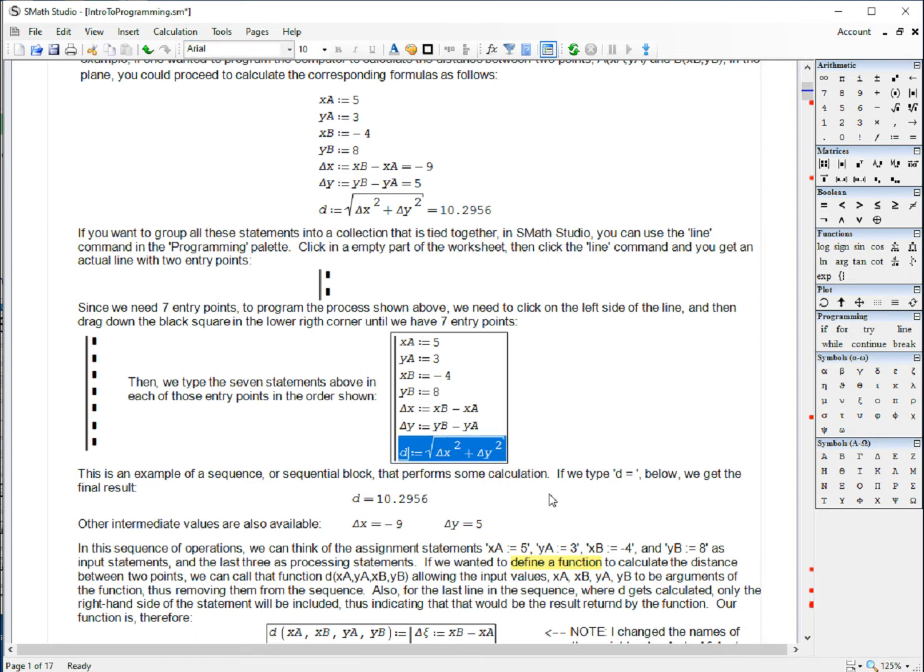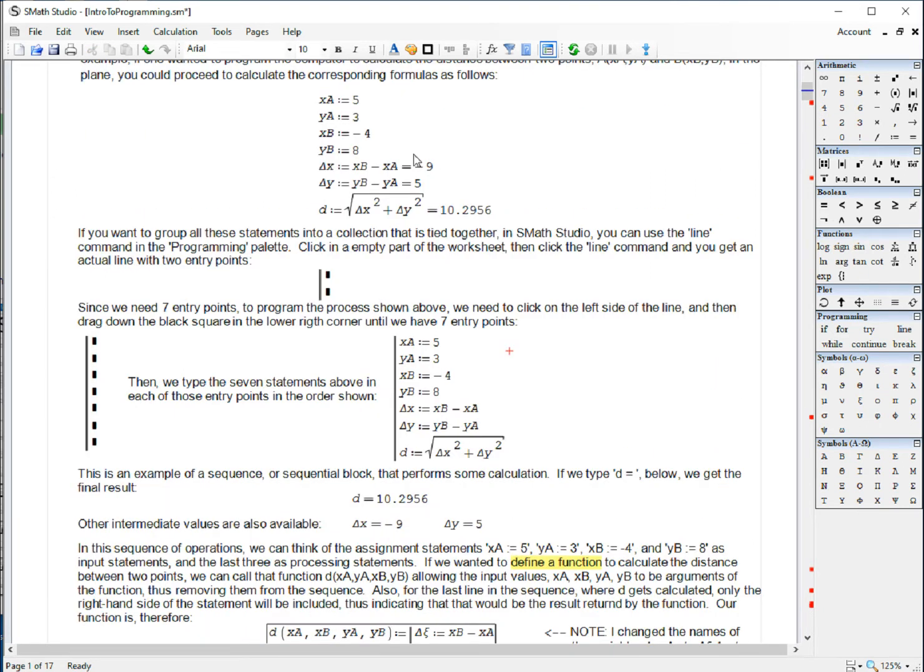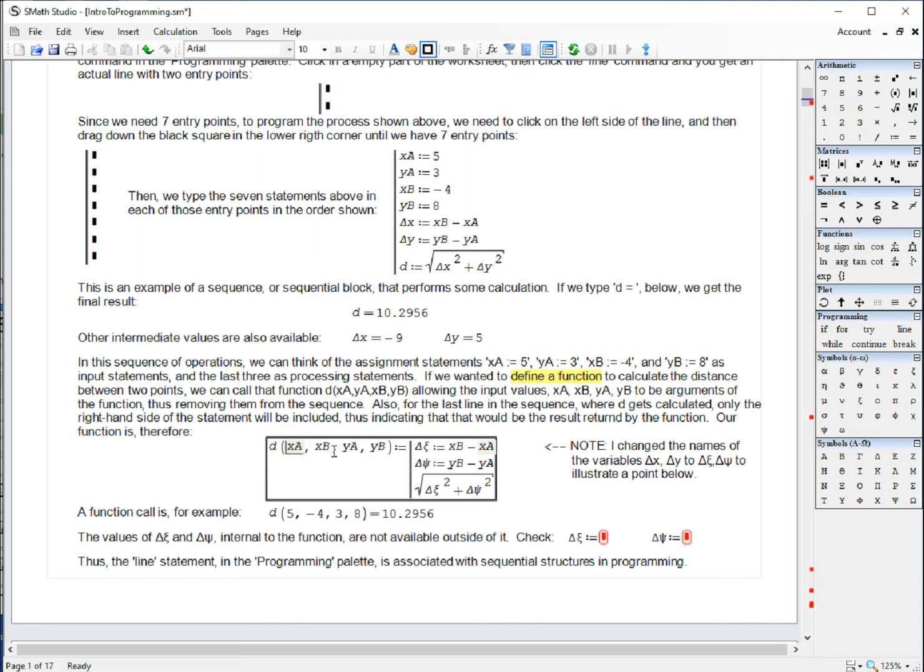The last point is the calculation of the distance, and so if I say D equal, the result appears here. And also intermediate results like delta X and delta Y are available for me to use after that. Now, we're going to be creating programs which are basically functions, functions that calculate something. And so the four points that represent the coordinates of points A and B could be passed on as arguments, and so we don't need to include them in the line. Instead, I change here the notation: I call delta X equals XB minus XA, which is this line right here, and delta Y equals YB minus YA, which is this line here, and then I calculate just the right-hand side of D. That is the result that gets reported back to the user, and so if I call this function D with this argument, I get the result of 10.2956, which is the one that I have here.